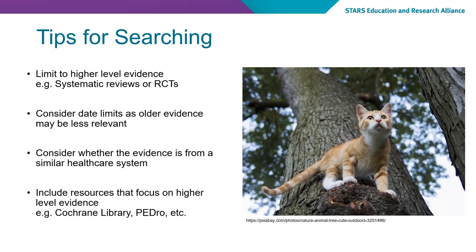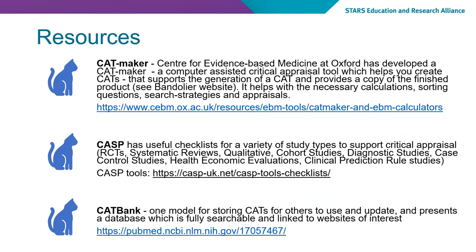Think about focusing on resources or databases that are focused on high-level evidence, such as the Cochrane Library, PEDro, and others. There are a series of resources which you might find useful — these are more broadly on working with and developing CATs. There is the CAT Maker, which helps you develop the CAT. There is CASP, which is a series of checklists to interrogate the evidence that you've found. And CAT Bank is a place to store them.